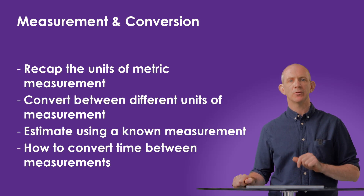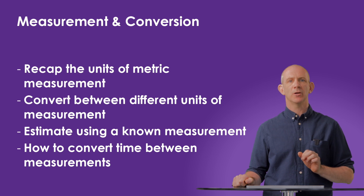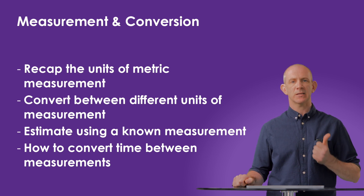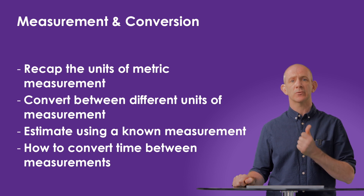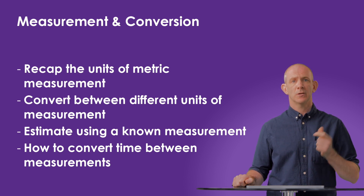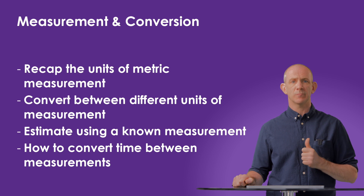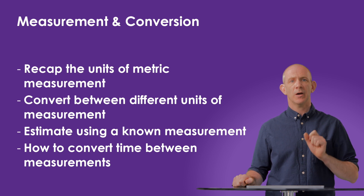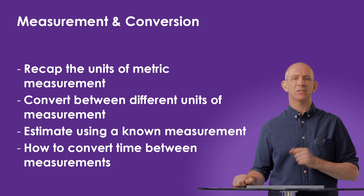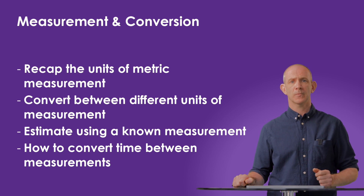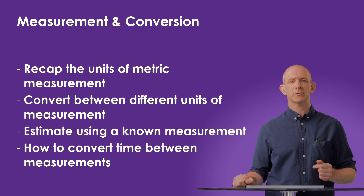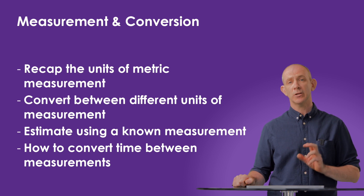In this video we reviewed the units of metric measurements, remembering that milli stands for thousandth, centi for hundredth, and kilo for a thousand of the base unit. We converted between different units of measurement, estimated height using scale, and looked at converting between different units of time. In the next video we'll be looking at how to calculate the perimeter and area of different shapes, including compound shapes.